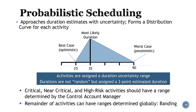The critical, near-critical, and high-risk activities in the schedule are assigned a duration uncertainty range with a three-point estimated duration. In a project using earned value management, this estimating is generally performed by the control account manager, or CAM. The remainder of the activities can be assigned a duration range using a banding approach, meaning a group of activities are given the same probability distribution without individual assessment.